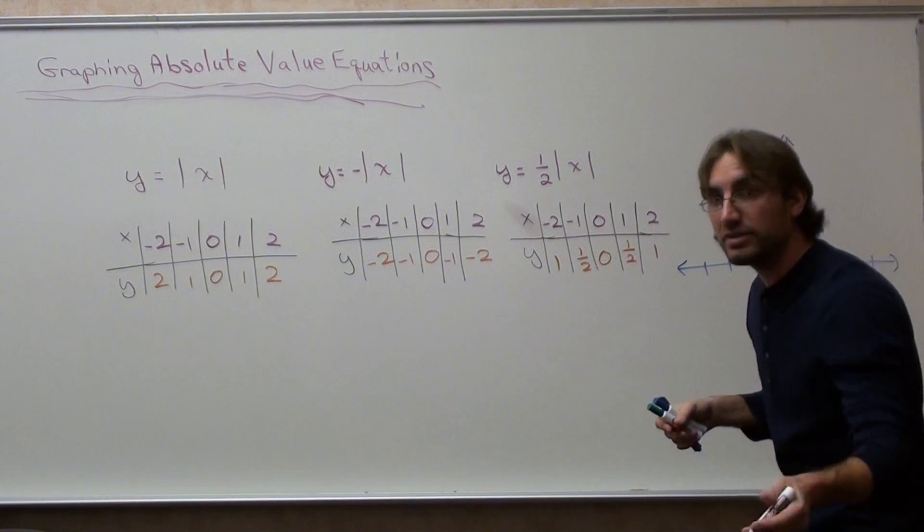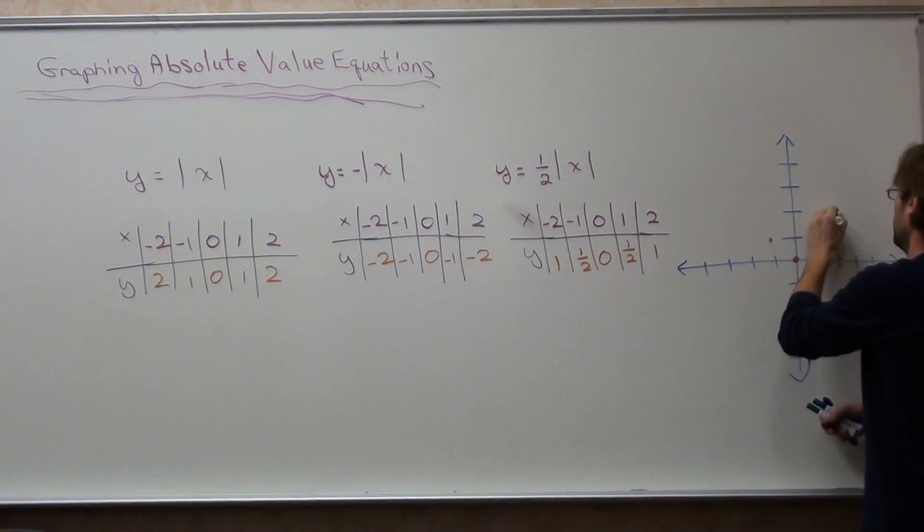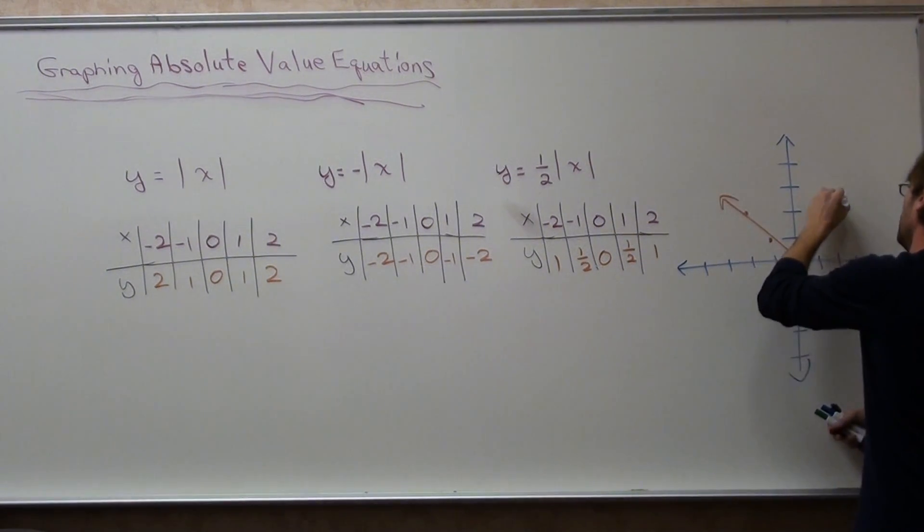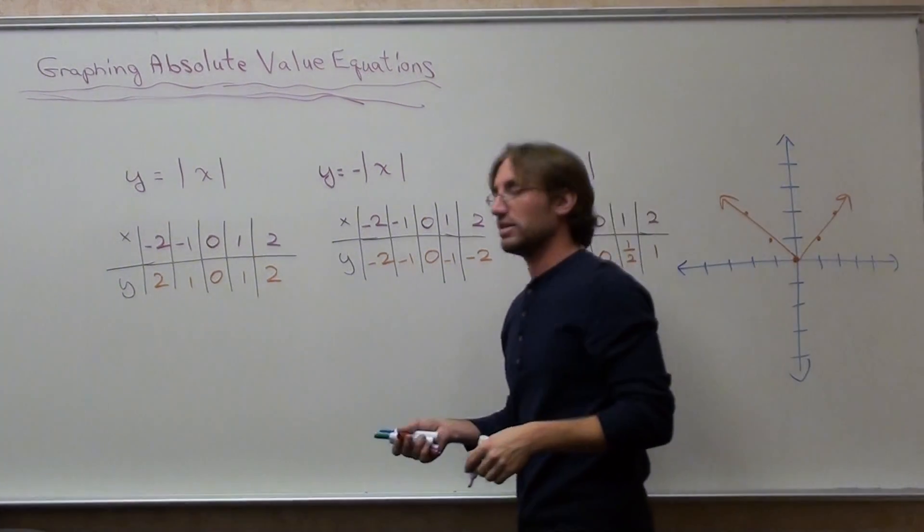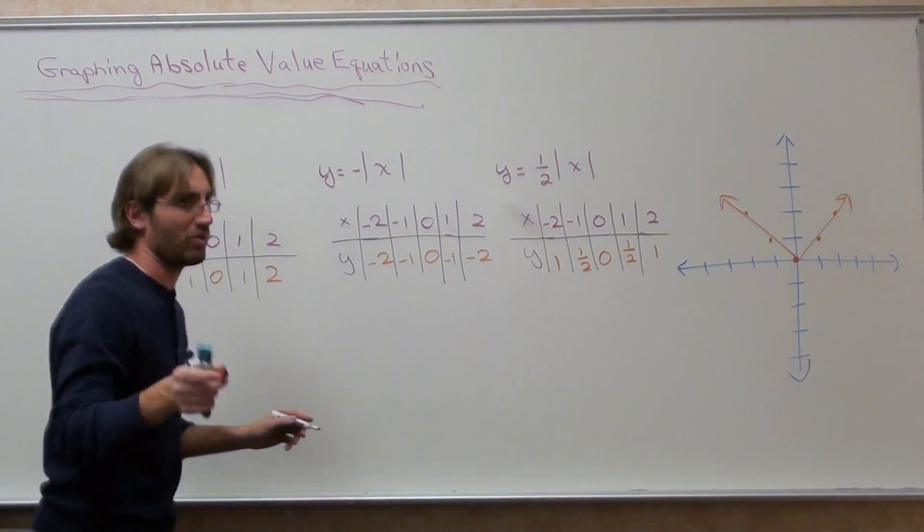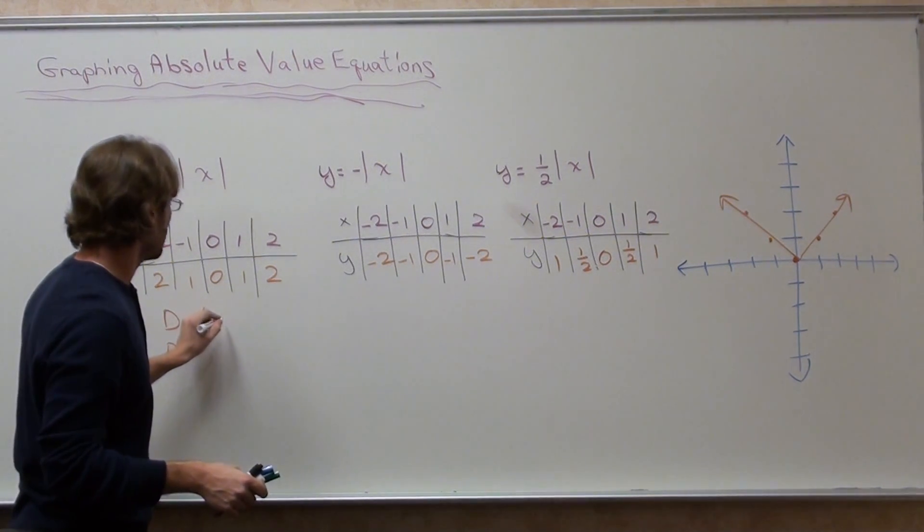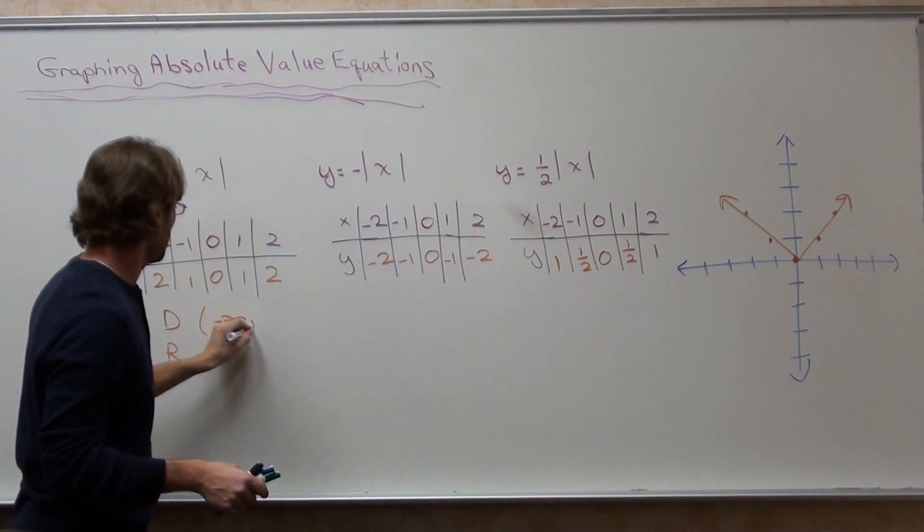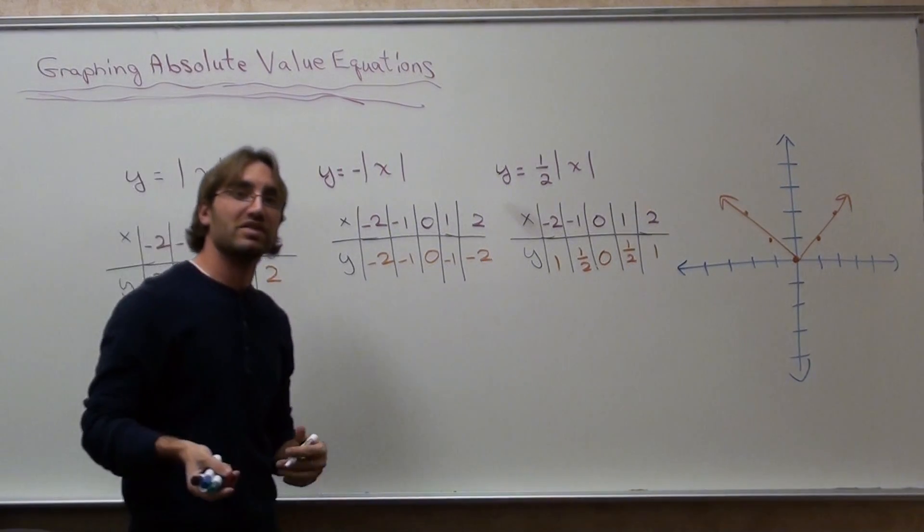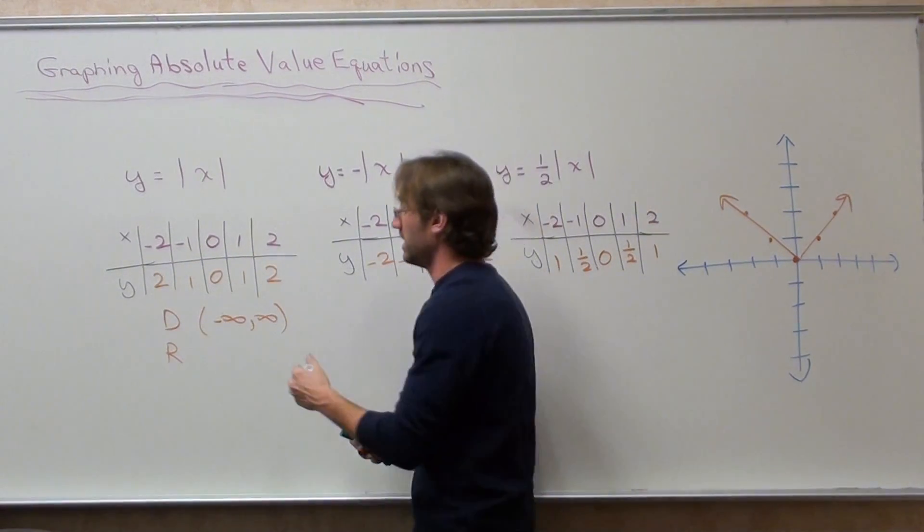So graphing again, that's my basic function of absolute value. Its domain, now I'm going to just write d and r, because I've been writing it too long. My domain is from negative infinity to infinity on the first graph, and it's from zero to infinity for the range.